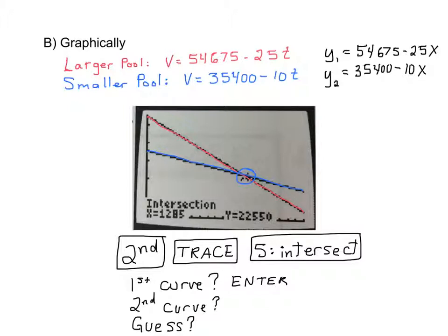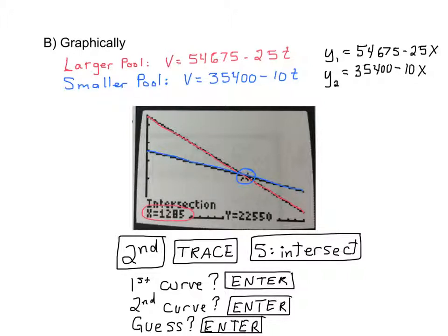Then it will ask you for the second curve. But after you press Enter the first time, the cursor then would have moved to the second curve, so you don't have to move your cursor anymore. You just press Enter again when it asks you for the second curve. Then it will ask you for a guess. You don't need to move the cursor at all. You just press Enter. And it will then tell you the intersect, which is shown on this calculator screen, of 1,285 and y equals 22,550.